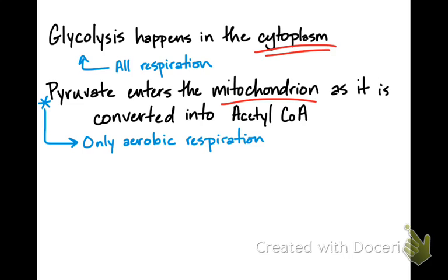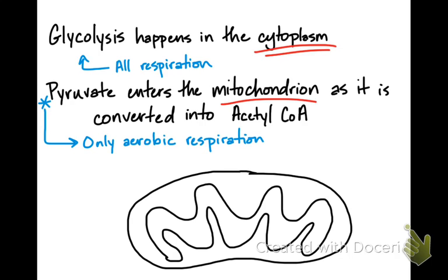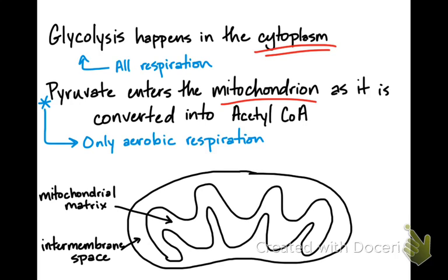So just to refresh, mitochondrion has an inner and an outer membrane. When we talk about the mitochondrial matrix, we're talking about the inner part of the inner membrane. And when we talk about the intermembrane space, we're talking about the space between the two membranes.